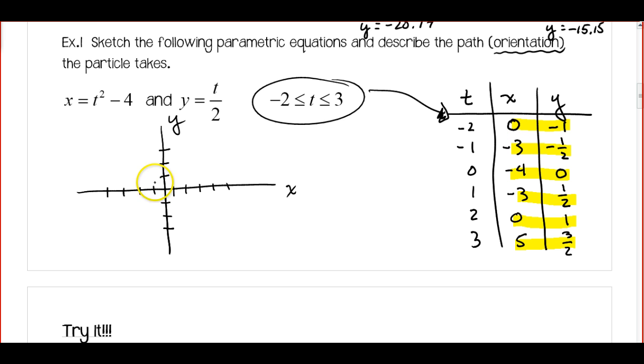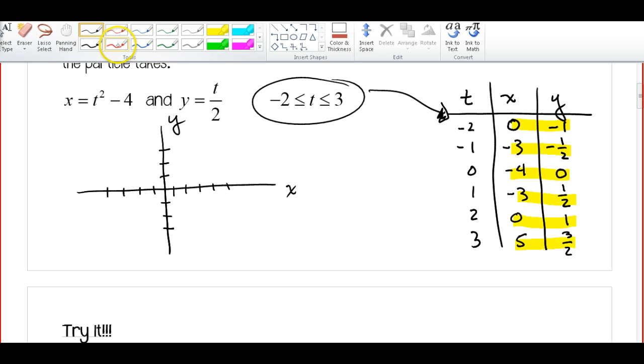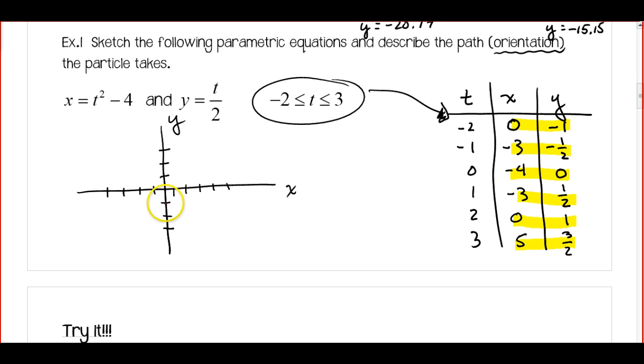So I've got 0, negative 1. I'm going to graph these in red. 0, negative 1 is right here. And again, notice the order that we're going to be graphing these points. And then, negative 3, negative 1 half is going to be about here. Negative 4, 0. So I started here, and I'm going this way.